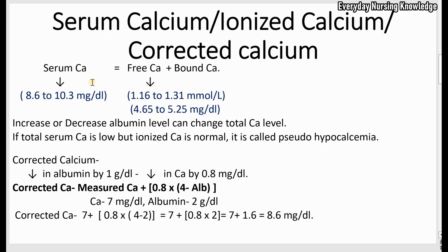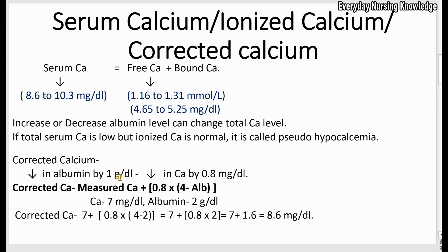If a patient has low serum calcium and low albumin, the doctor can either order an ionized calcium test or check the corrected calcium value. For every decrease in albumin by 1 gram per deciliter, calcium drops by 0.8 milligrams per deciliter. Normal albumin level is around 4. The formula for corrected calcium is: Corrected Calcium = Measured Calcium + 0.8 × (4 − Albumin).